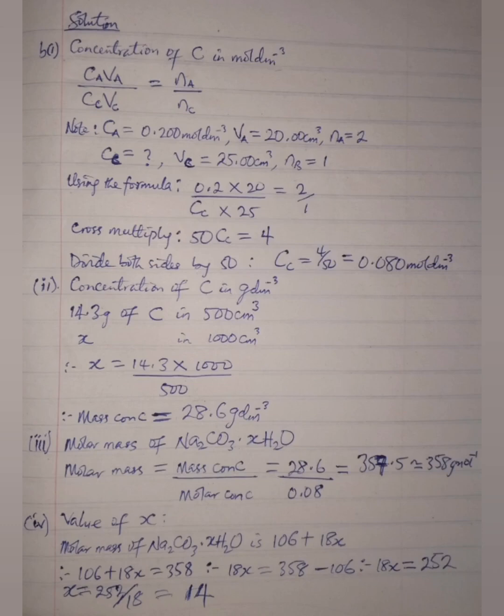And remember that when you are doing calculations in mole per dm³, when a question asks for mole per dm³, it's asking for molar concentration. You get your Na from the equation of reaction, that is number of moles of acid. Your NB also from the equation of reaction, number of moles of base. In this case now my Na is 2, my NB is 1.